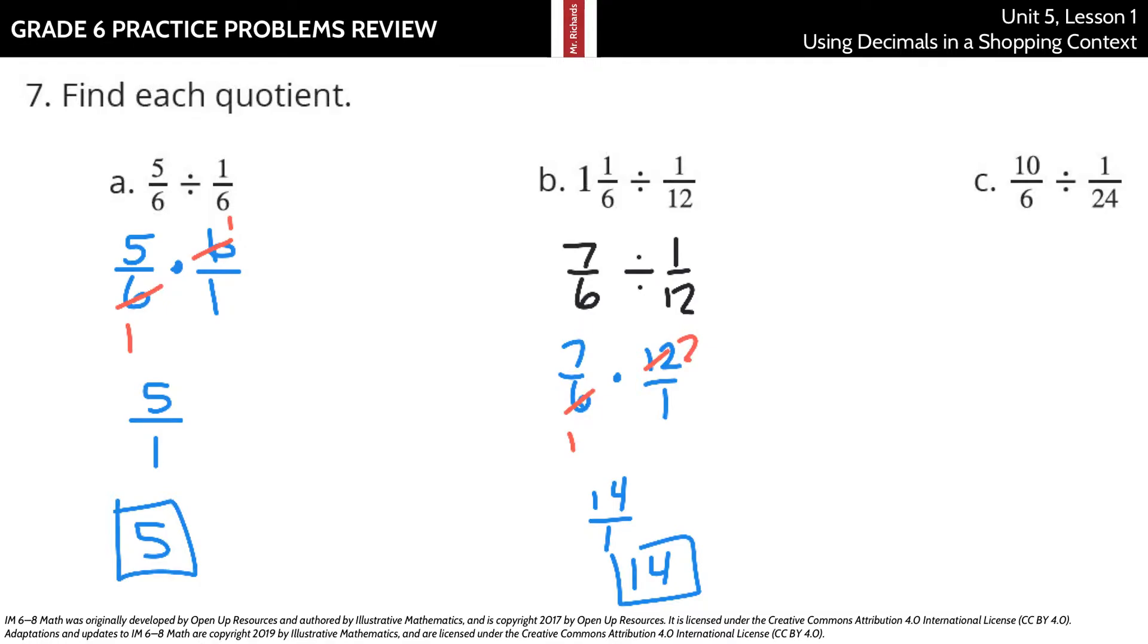And lastly in our 10/6 divided by 1/24 as goofy as that looks, we're going to have here 10/6 keep, change, and flip 24 over 1. Divide by 6 you get 1, divide by 6 you get 4 and so you're left with 10 times 4 is 40, 1 times 1 is 1 and so 40 over 1 is just 40. And that is it for this grade 6 practice problems review on unit 5 lesson 1 using decimals in a shopping context. Good luck.